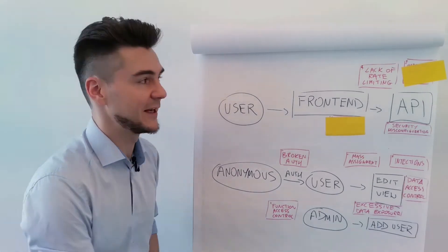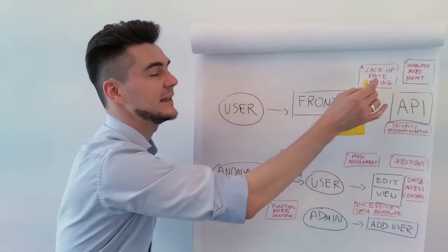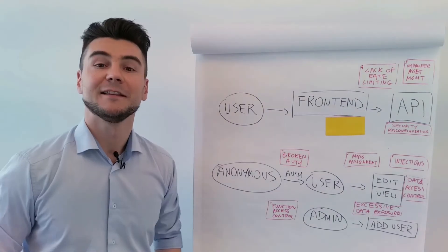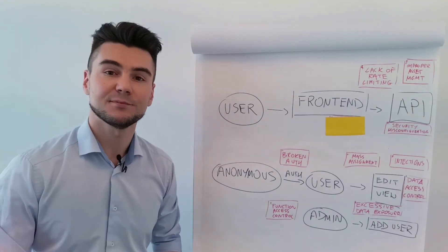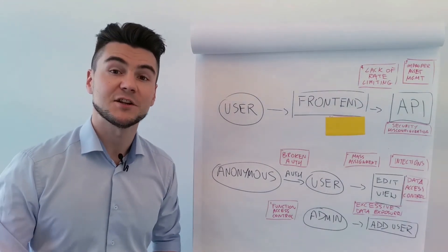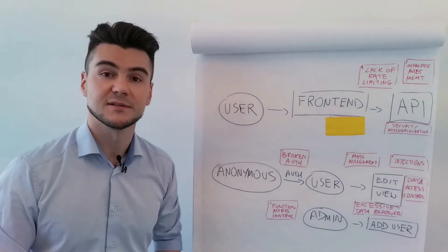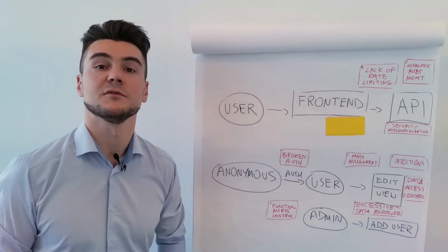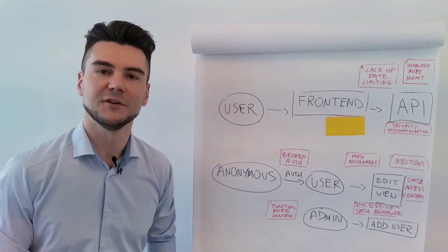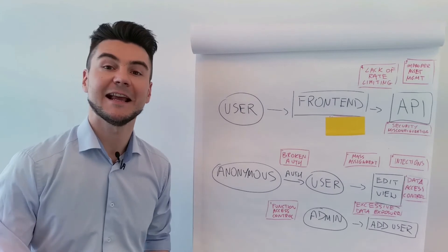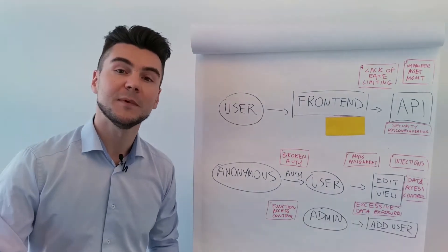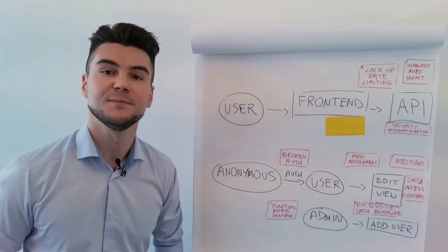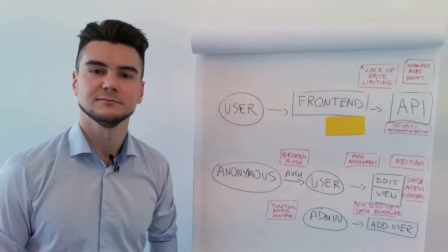Improper Asset Management. The API consumed by your front-end may not be the only one. There may be a separate endpoint for administrators — slash admin versus slash user — or a deprecated version of an API. What I often find are test and staging environments, often managed by a third party, that are easier to compromise because debug mode is turned on.